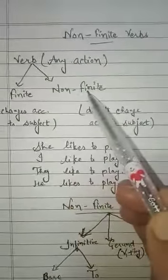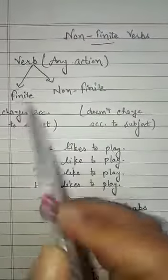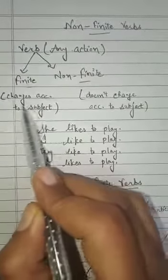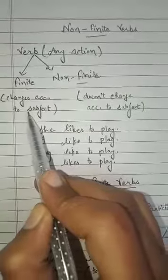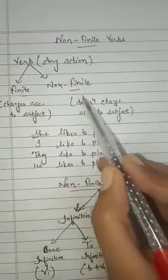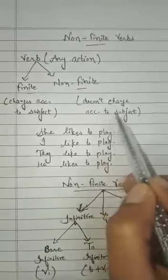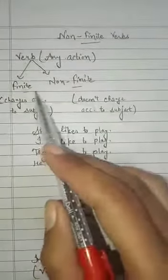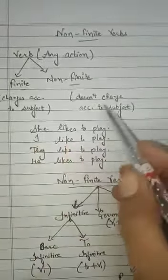Now we are going to talk about finite and non-finite verbs. You must know the difference between them. A finite verb changes according to the subject — singular or plural — while a non-finite verb does not change according to the subject. Let's see some examples so you can understand the difference.